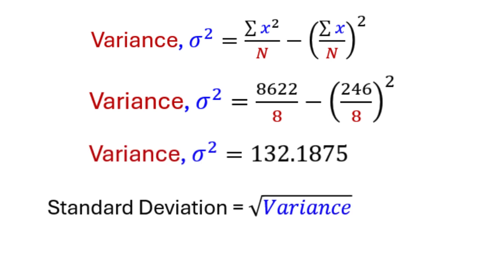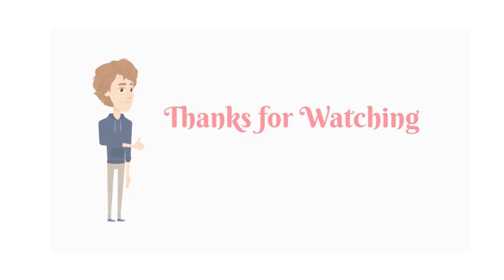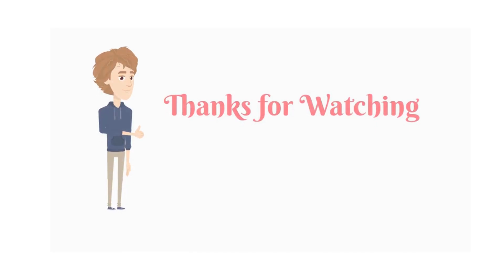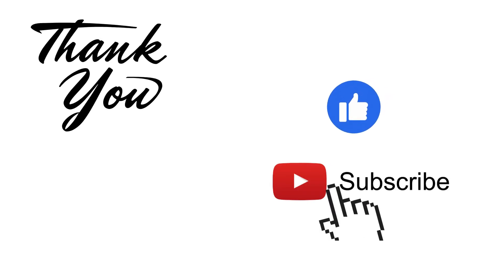The standard deviation is found by taking the square root of the variance. On simplification, we get 11.5. Thanks for watching.